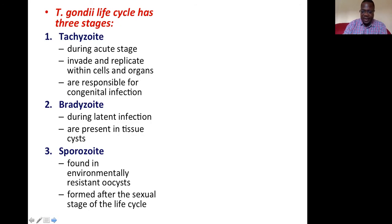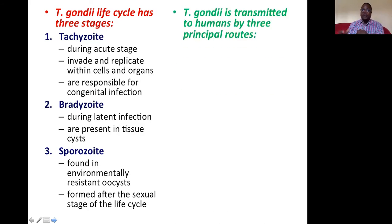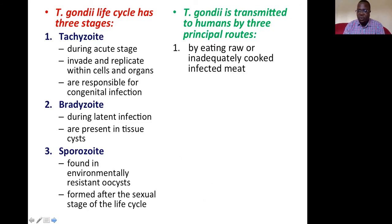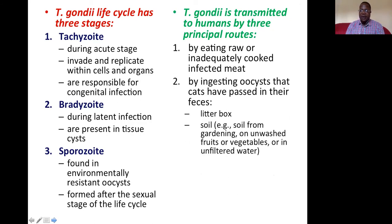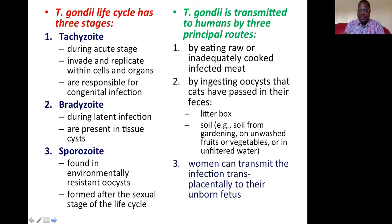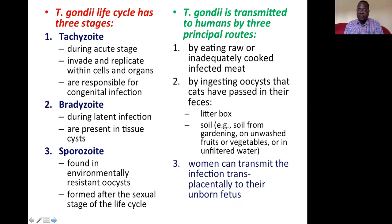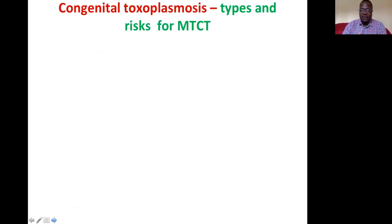In summary, Toxoplasma gondii is transmitted to humans by eating raw or inadequately cooked infected meat, by ingesting oocysts passed in cat feces, or via transplacental transmission from a pregnant woman to her unborn fetus. This transplacental route is the focus of this lecture, as we are discussing congenital toxoplasmosis — infection of the unborn child acquired in utero.